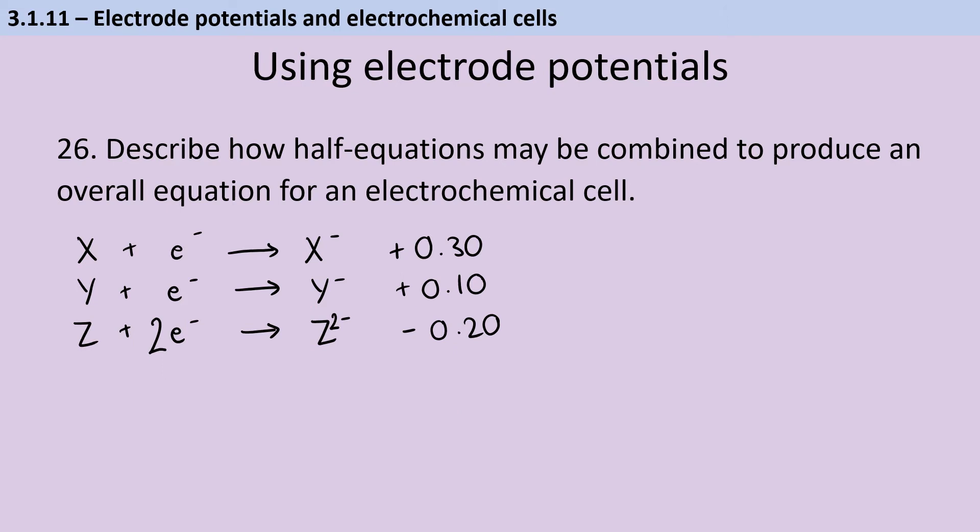So now I'm going to try to combine two of these half equations. And just to allow me to talk about electrons, I've actually changed my equation for Z. So I've made it pick up two electrons to form a Z²⁻ ion, which I can do because it's an imaginary element, so I can do whatever I like with it. But that's just why it's changed, so that we can talk about that when we get there.